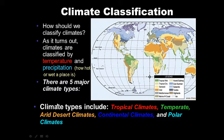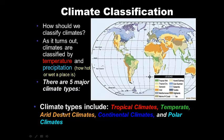There are five basic climate types — these are subdivided into more specific types, but the five basic ones are tropical, temperate, arid or desert, dry climates, continental climates, and polar climates.